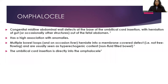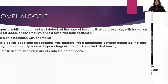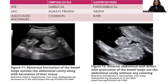Omphalocele is a congenital midline abdominal wall defect at the base of the umbilical cord insertion, with herniation of gut or occasionally other structures out of the fetal abdomen. It has a high association with anomalies; multiple bowel loops and occasionally liver herniate into the membrane-covered defect. Contents are not free-flowing and are usually hyperechogenic non-fluid-filled bowel. The umbilical cord insertion is directly into the omphalocele. Its differential diagnosis is gastroschisis, differentiated by site (umbilical in omphalocele, paraumbilical in gastroschisis), presence of a sac (always present in omphalocele, absent in gastroschisis), and associated anomalies (common in omphalocele, rare in gastroschisis).